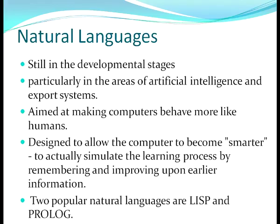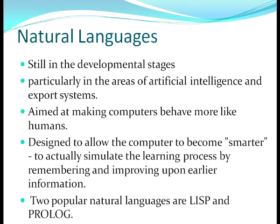Having discussed problem oriented languages, we move on to natural languages — the fifth generation languages. They are still in developmental stages but represent our future. These are being explored particularly in artificial intelligence and expert systems, aimed at making computers behave more like humans — allowing computers to simulate the learning process by remembering and improving upon earlier information, taking decisions with minimum human intervention. Robotics is a step in this direction. Popular natural languages include Lisp and Prolog.